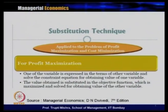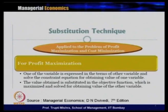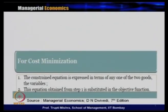For profit maximization, one variable is expressed in terms of the other and we solve the constraint equation for obtaining the value of one variable. Suppose there are two variables x and y. The best way to solve through substitution is to represent one variable with the other, solve for that variable, and substitute the value back. The value obtained is then substituted into the objective function — which is maximized — to solve for the other variable.